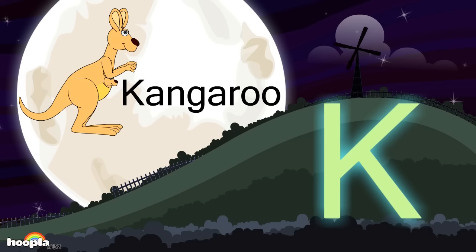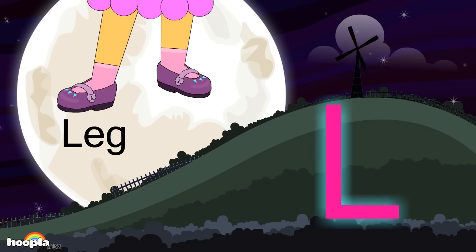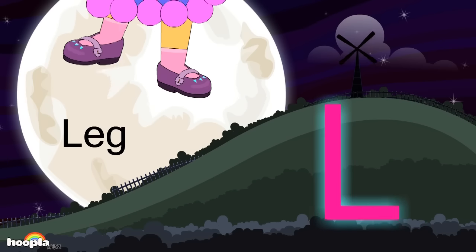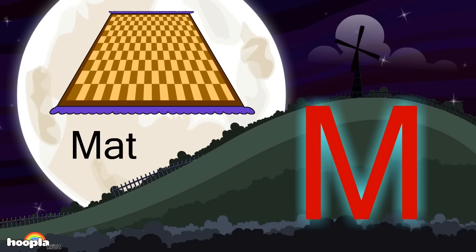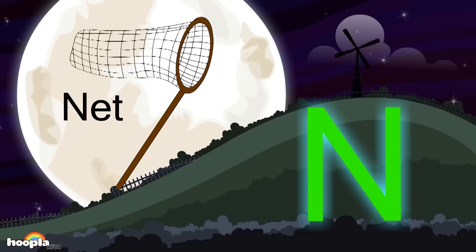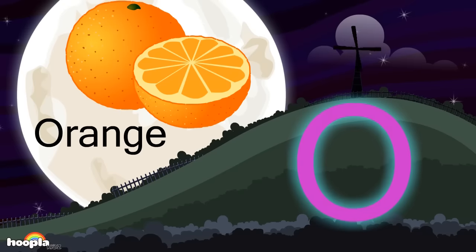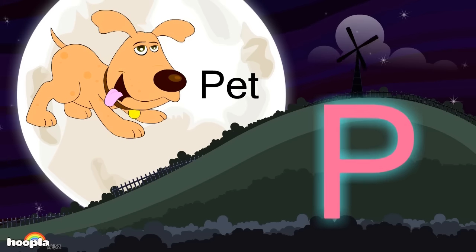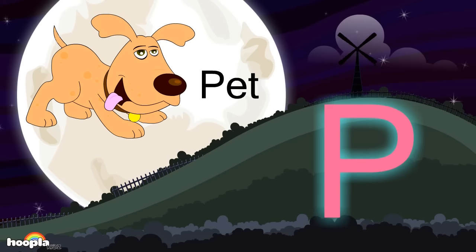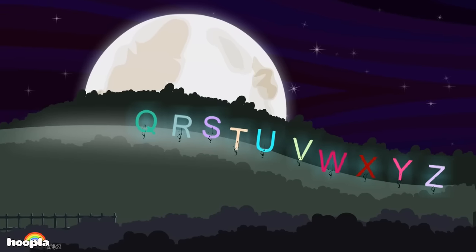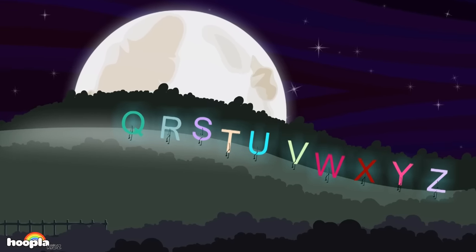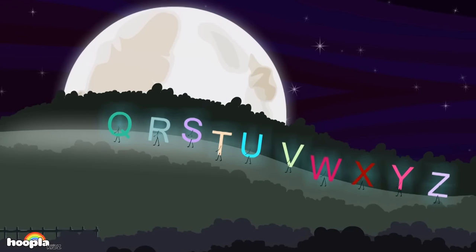K for kangaroo, L for leg, M for mat, N for net, O for orange and P for pet. This is the alphabet song.